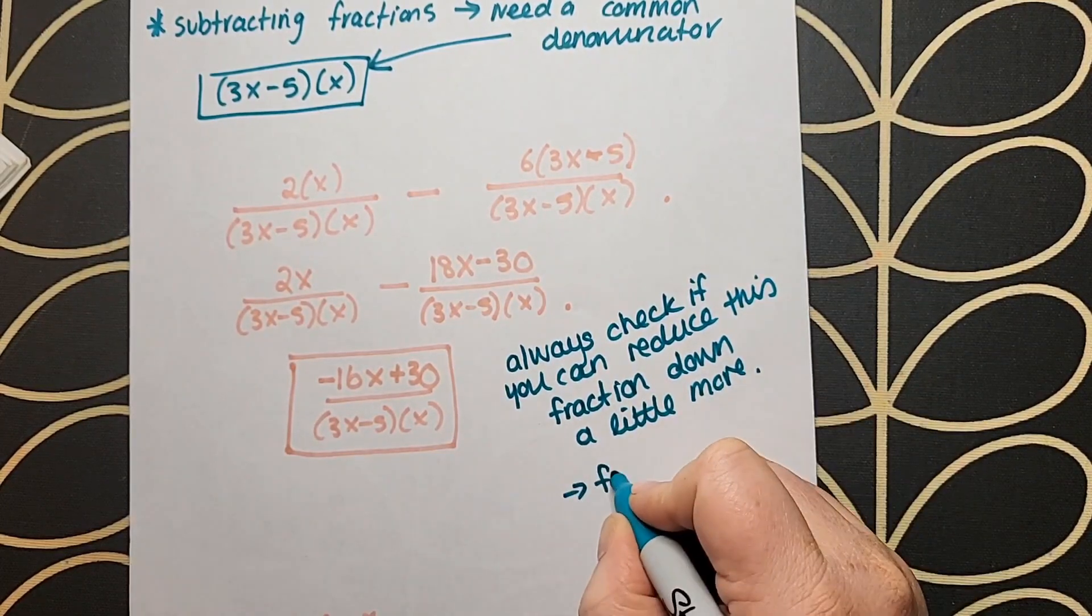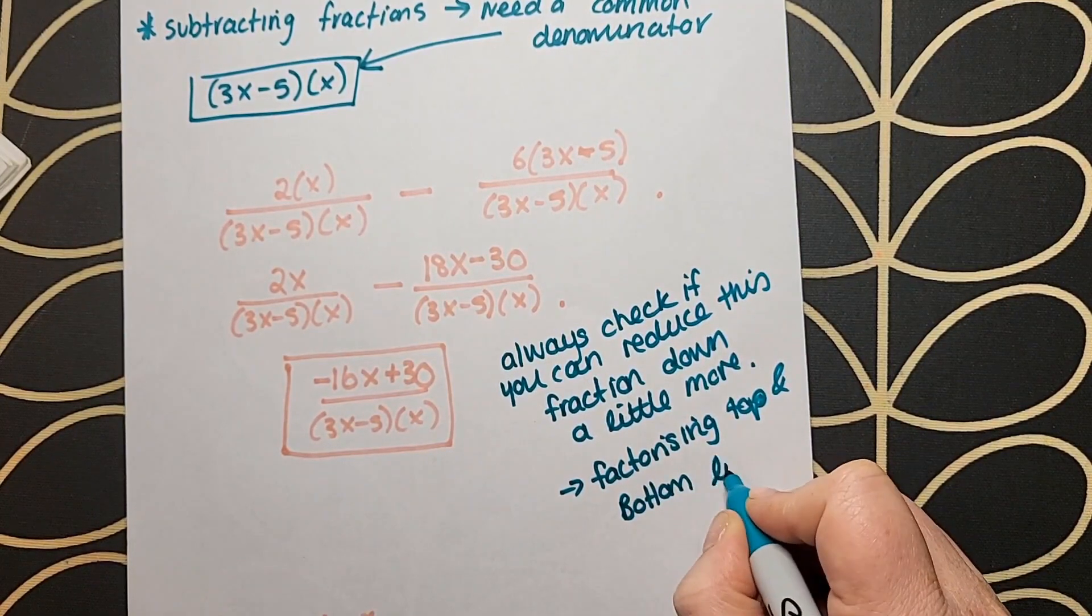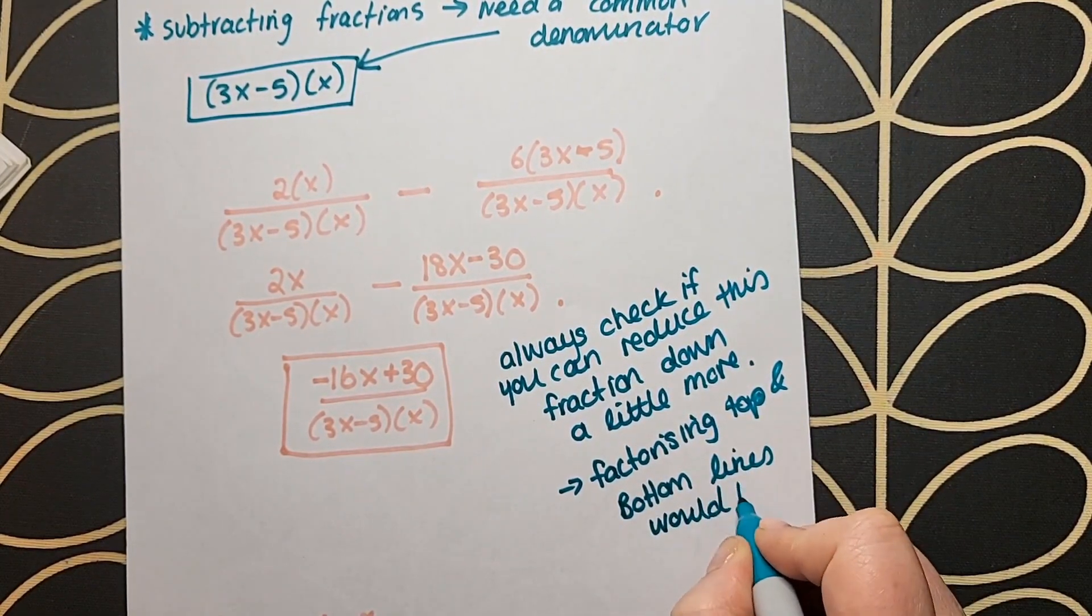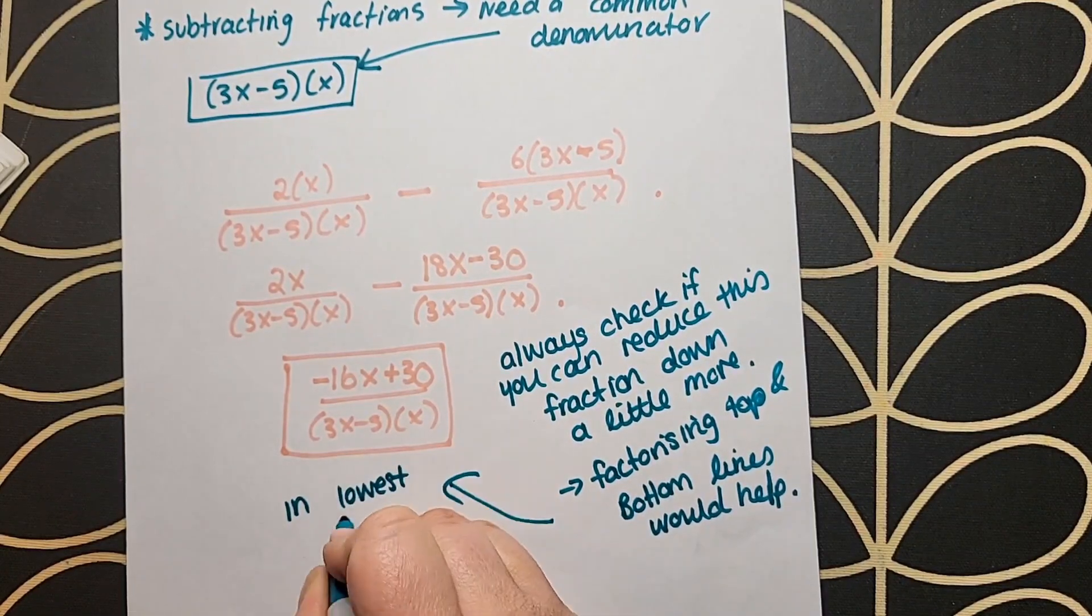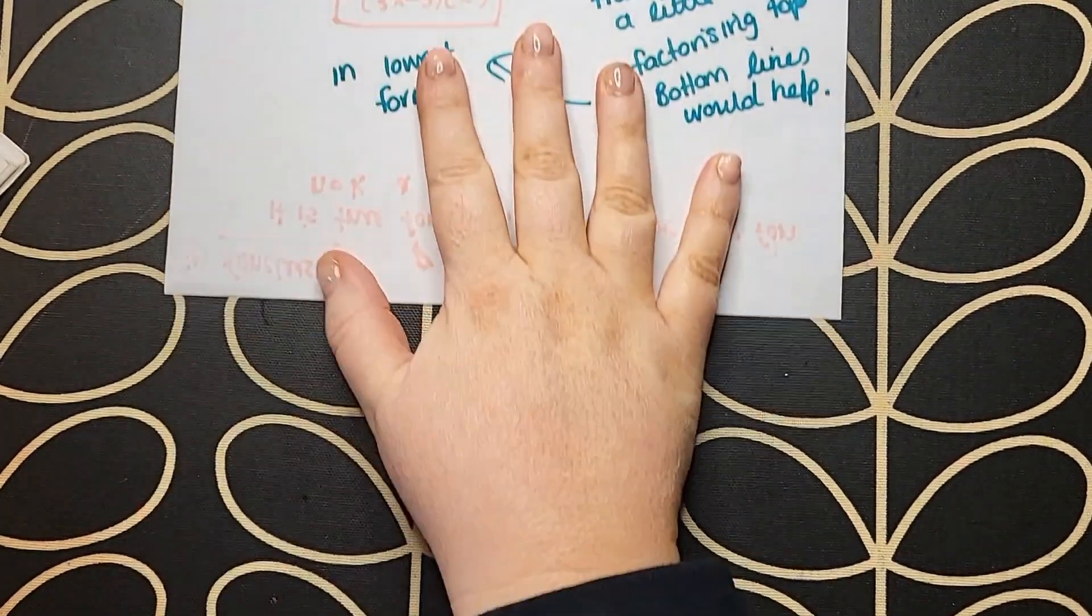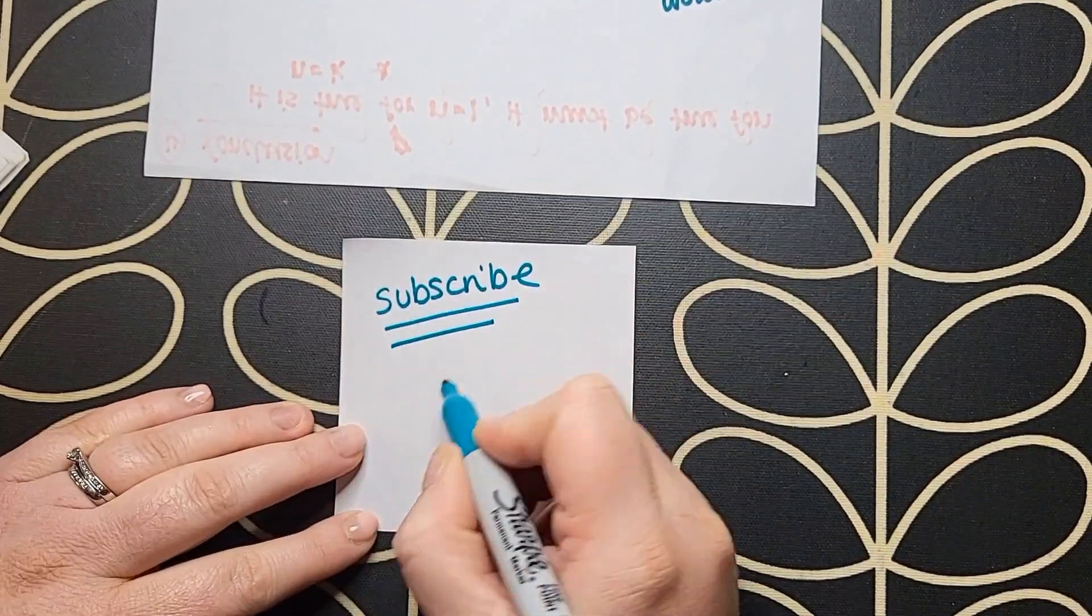Now you always check that. You always double check, and factorizing is your best friend when you're trying to simplify down fractions, especially algebraic ones. We can see here that our solution is in the simplest form, so we are done and dusted. Make sure you rewind and work with me through this question. Don't forget to subscribe. I'll see you in the next video.